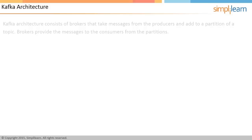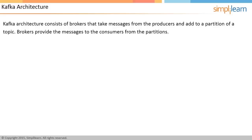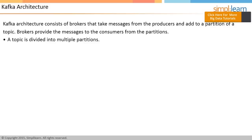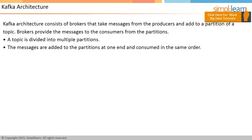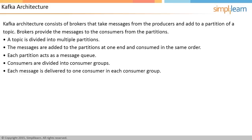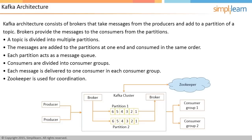Kafka architecture consists of brokers that take messages from the producers and add them to a partition of a topic. Brokers provide messages to consumers from the partitions. Producers create messages and send them to a particular topic and partition in a Kafka cluster. A topic is divided into multiple partitions; messages are added at one end and consumed in the same order. Each partition acts as a message queue. Consumers are divided into consumer groups, and each message is delivered to one consumer in each group. Zookeeper is used for coordination among Kafka brokers. The image illustrates the architecture with two partitions, two producers, two brokers, two consumer groups, and Zookeeper for distributed coordination.